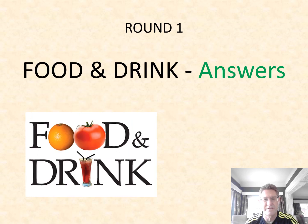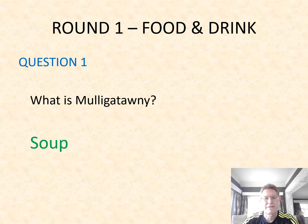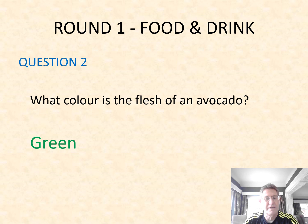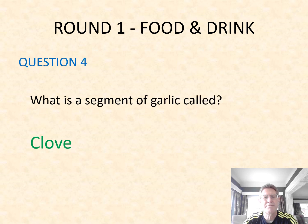We'll start with round one, our food and drink round. Question one: what is Mulligatawny? It is a soup — a nice spiced soup. Question two: what colour is the flesh of an avocado? It's green, quite a vivid green. Question three: what type of food is pitta? It's a bread. Question four: what is a segment of garlic called? It's called a clove — clove of garlic.